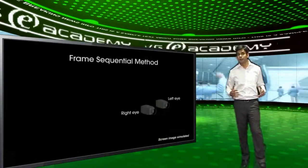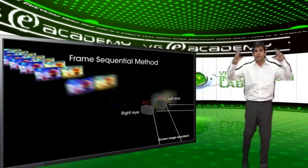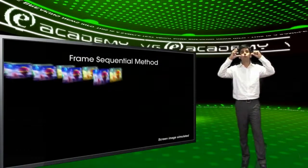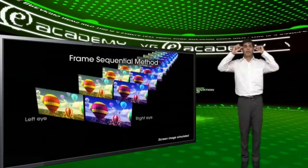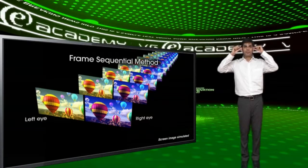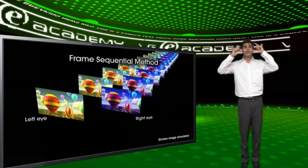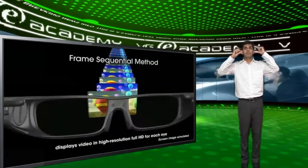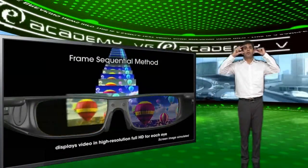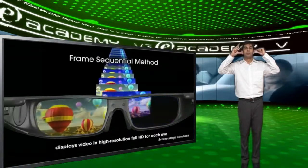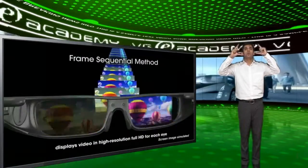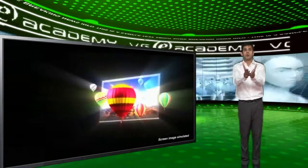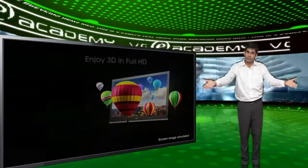Active Shutter Technology की बात करें, जिसे नाम ही suggest करता है — ये Shutters पर काम करता है. एक है Left Shutter और दूसरा है Right Shutter. Left Image को देखने के लिए Left Shutter को खोल दिया जाता है और Right Shutter बंद रहता है. Right Image को देखने के लिए Left Shutter को बंद कर दिया जाता है और Right Shutter खोल दिया जाता है. और finally दोनों ही Shutters को Open कर दिया जाता है, Pictures को Merge कर दिया जाता है और एक 3D Image आपके सामने आती है.